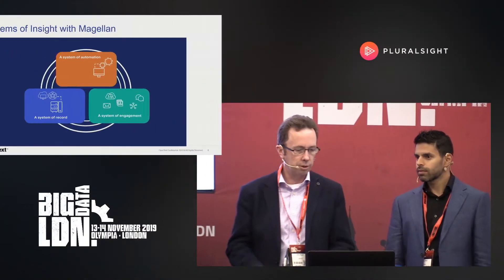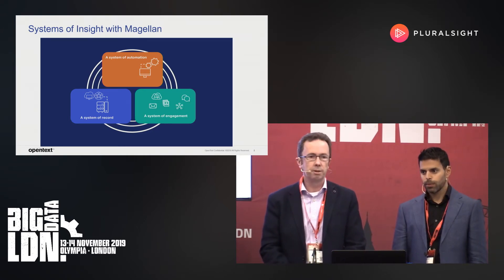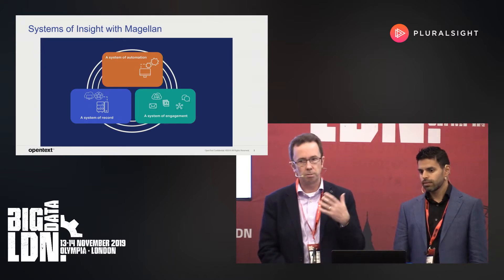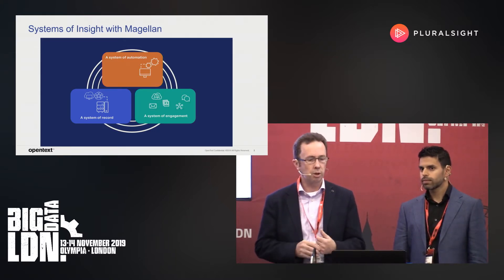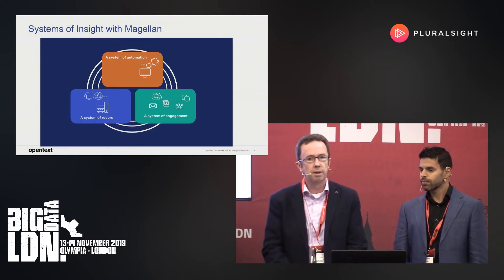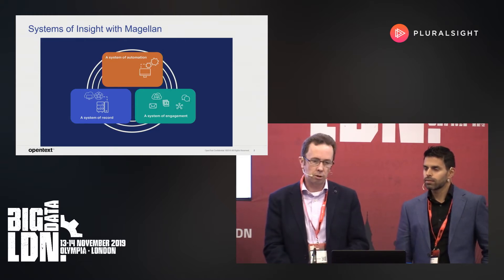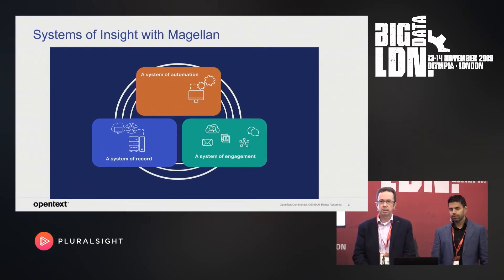A system of insights is considered to have three main functions. It's a closed loop system. You've got the system of record, which is based on your transactional systems — structured database information like order processing data. Then you've got the system of engagement, where you interact with your customers. That tends to be a lot more unstructured information, such as email communications, transcripts from a call center, and data filled out on web pages.